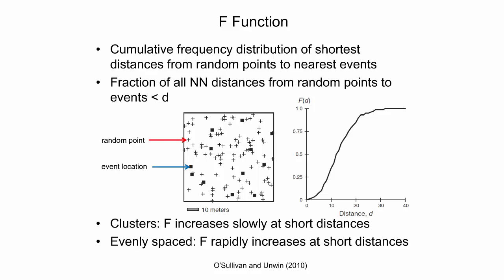For evenly spaced patterns, the opposite is true. Since most random point locations are relatively close to an event, f will rise quickly at short distances. In the given example, point events are evenly distributed, giving an f-function that rapidly increases at short distances.